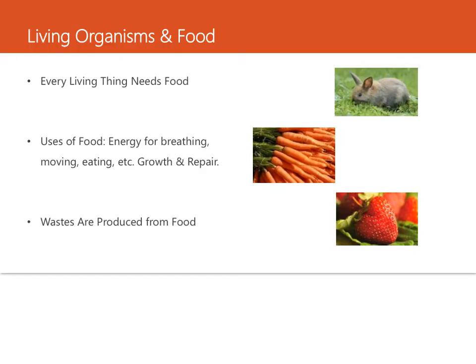When animals eat plants, the sun's energy — which was changed into a different form and stored in those plants' tissues — is passed along to the animals. So food provides energy for both plants and animals. They use this energy to perform life functions such as breathing, moving, eating, reproducing, growing, repairing, and even sleeping. We need energy and we use energy.